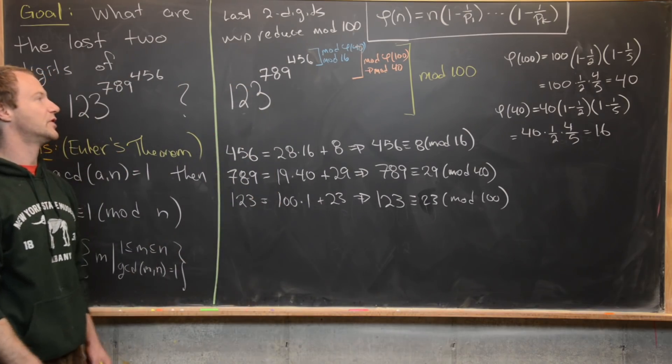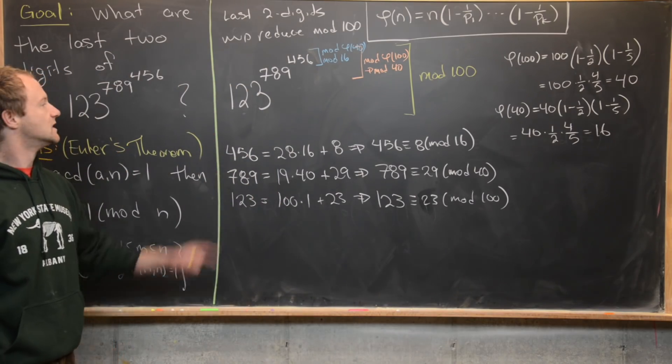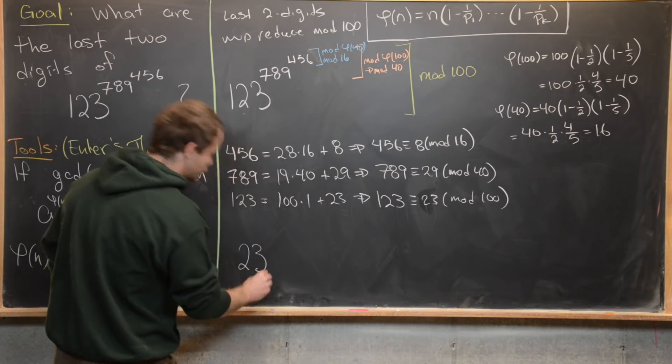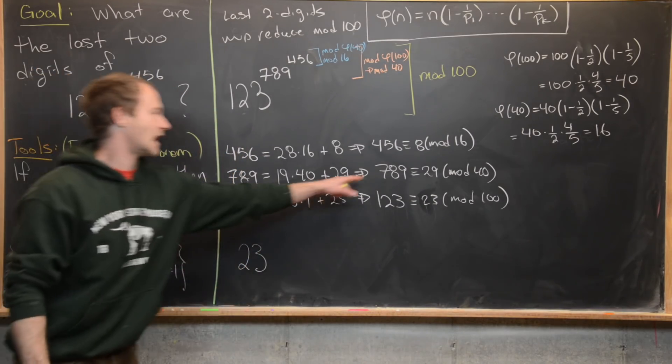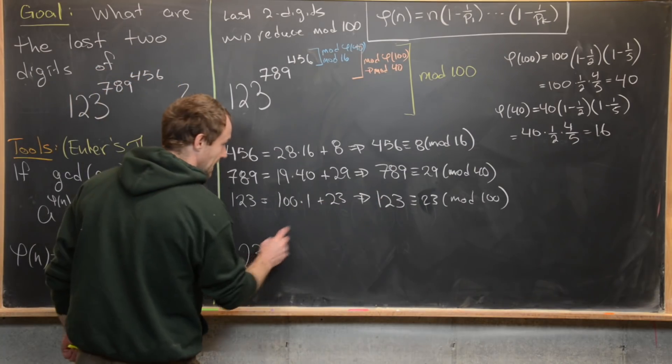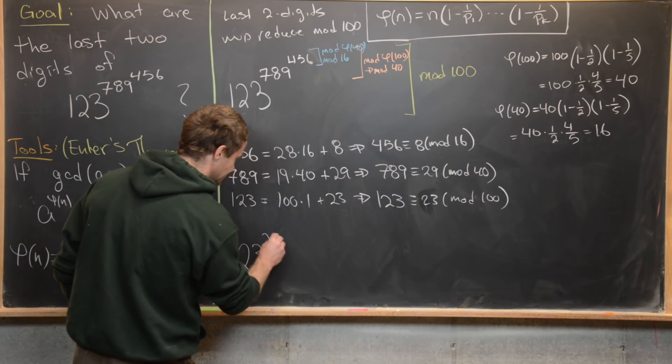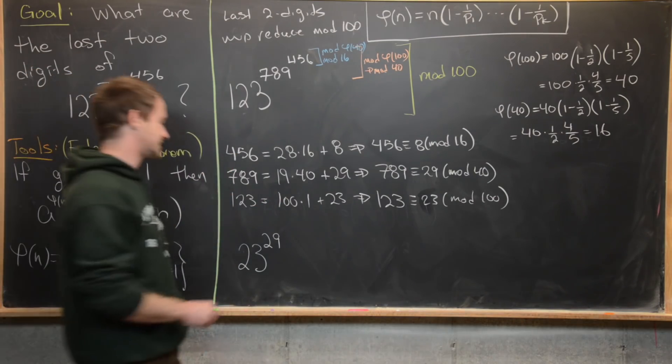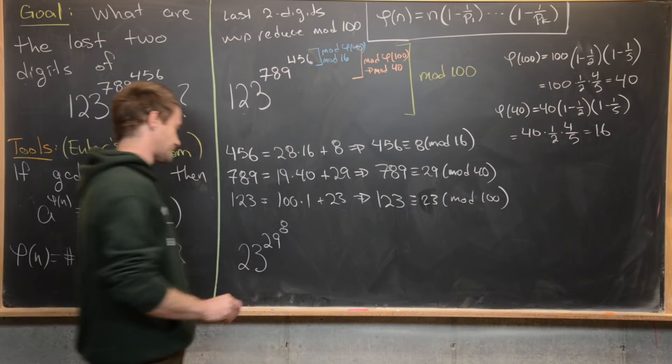Now we want to put all of this together. So we can reduce this one bit at a time. So this is going to be 23. And now we've got 789 goes to 29 to the 29. And then we've got 456 becomes 8.